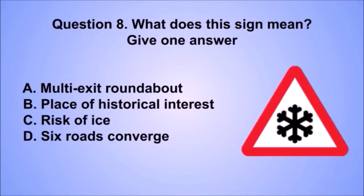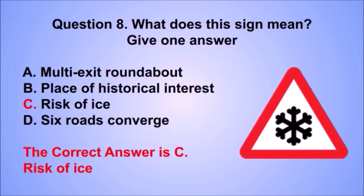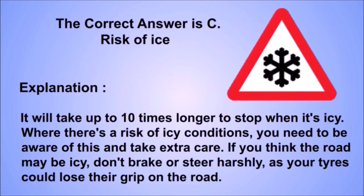Question 8. What does this sign mean? The correct answer is C: Risk of ice. It will take up to 10 times longer to stop when it's icy. Where there's a risk of icy conditions, you need to be aware and take extra care. If you think the road may be icy, don't brake or steer harshly, as your tires could lose their grip on the road.